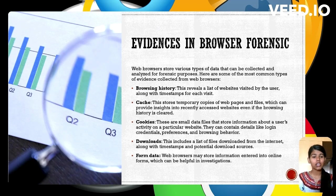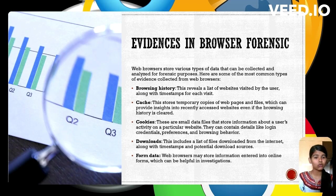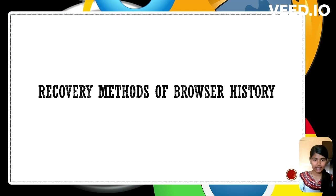Web browsers are a rich source of forensic data, capturing: browsing history — a list of visited sites with visitation times; cache — temporary files offering clues to recent web activities; cookies — data files revealing user interaction with websites; downloads — records of files downloaded including times and source; and form data — stored input from online forms, useful for investigation leads.